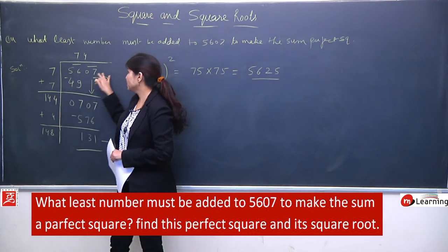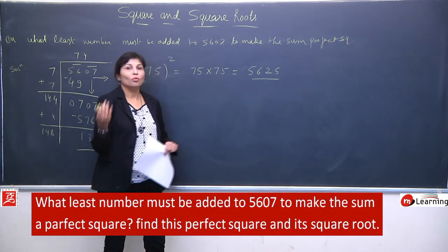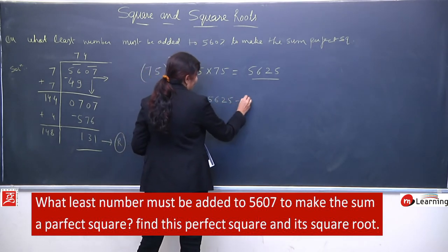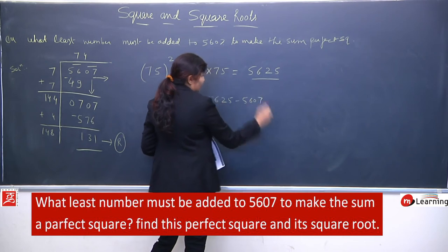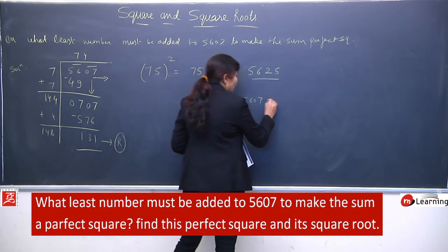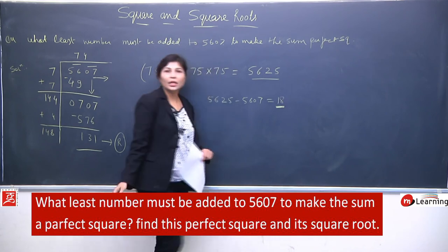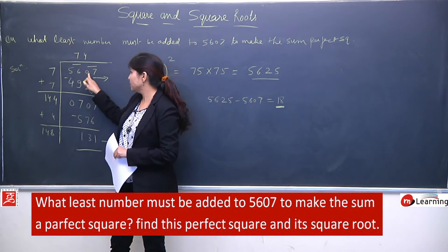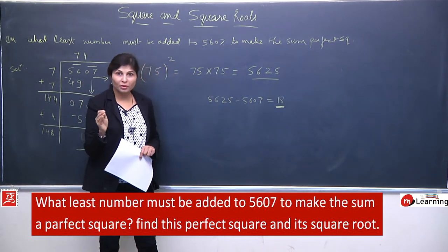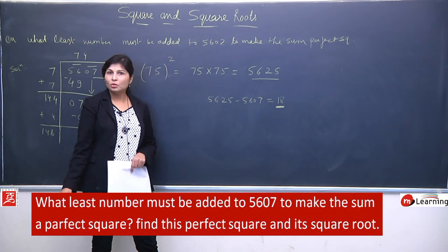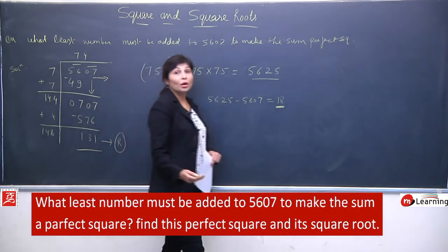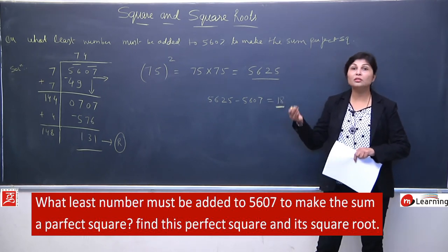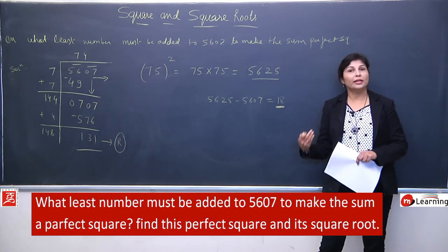5607 mein hum kya plus karein woh find karne ke liye: 5625 − 5607 = 18. So 18 is the required number which must be added to 5607. 5607 mein 18 add kiya toh 5625 ban jayega — 75 ka square. Or you can write: the square root of 5625 is 75. Dono ka meaning same hai.